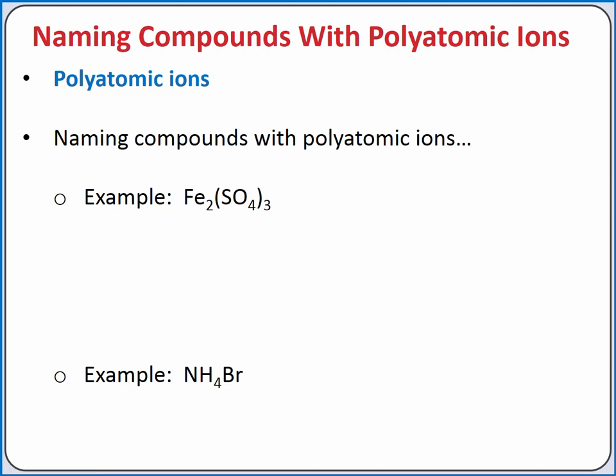Polyatomic ions are covalently bonded atoms that together have a net charge and act as an ion. When naming compounds with polyatomic ions, add the name of the polyatomic ion as it is into the name of the ionic compound.